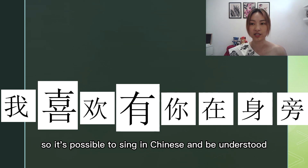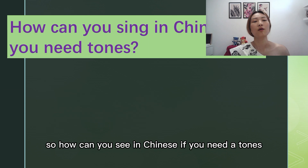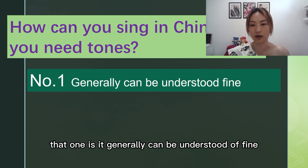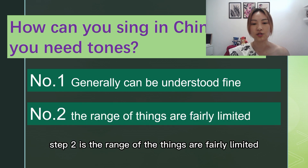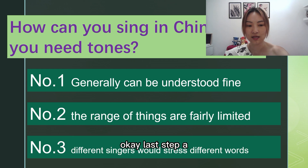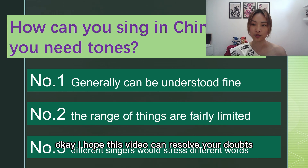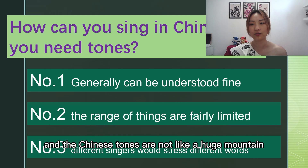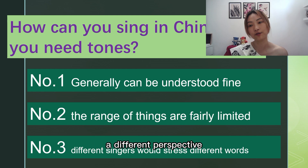So it's possible to sing in Chinese and be understood, or whisper, or do whatever you want. So how can you sing in Chinese if you need tones? Step one: you can generally be understood fine. Step two: the range of the things being discussed is fairly limited. Last step: different singers stress different words. I hope this video can resolve your doubts. Chinese tones are not like a huge mountain — they just describe the sounds from a different perspective.